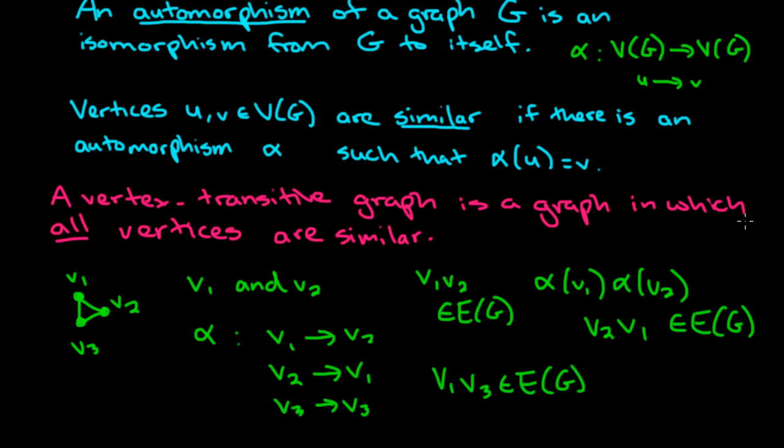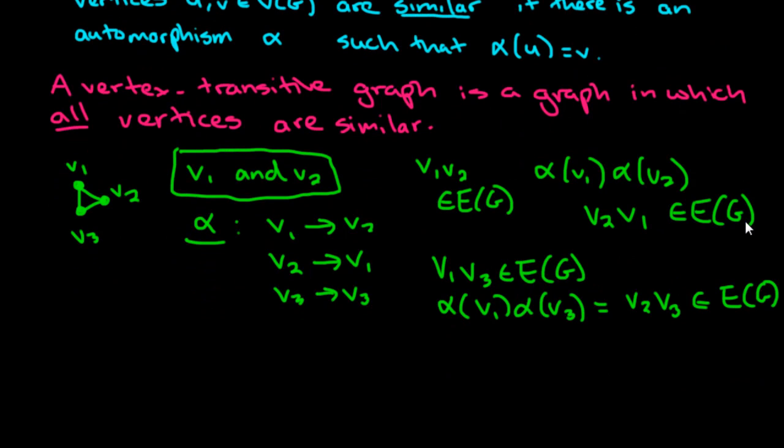And finally, we can check the other ones like this. V1, V3 was an edge of the original. So let's check alpha V1, alpha of V3. V1 gets sent to V2, and V3 gets sent to V3, and that is in fact an edge. So I've only really done this for two of them, but you can check the other. The edge V2, V3, we can see that after the mapping it still is in the graph. In particular, using this mapping alpha, I was able to show that V1 and V2 are similar. But of course you can do that for any pair of these vertices. So this is an example of a vertex transitive graph.